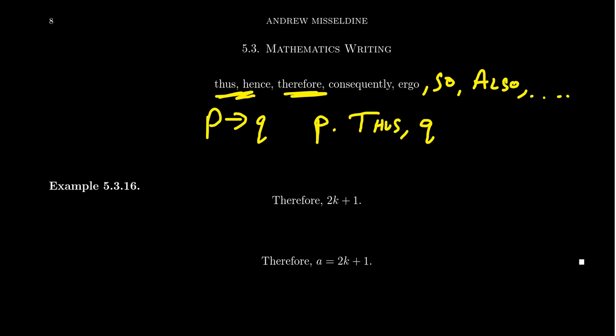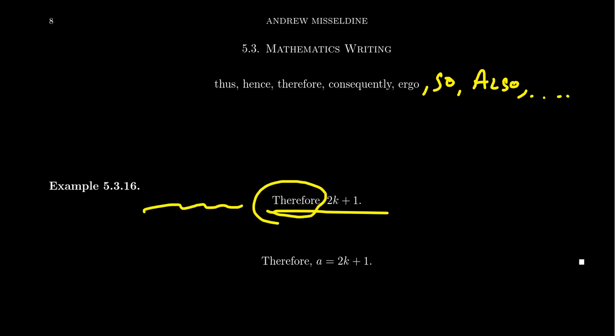So let's consider the following example below here. If you had the sentence therefore 2k plus 1, this is not a really good sentence. And that's not because I don't know what comes before it. There's an implication here, so therefore suggesting that because of the things that happened before it, it must follow that 2k plus 1 holds.